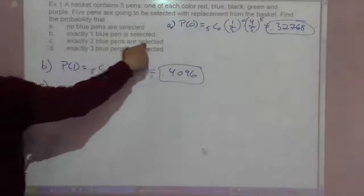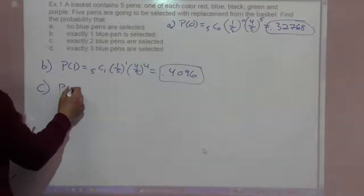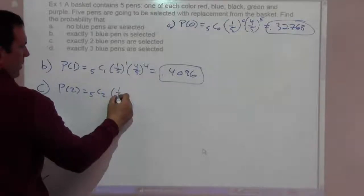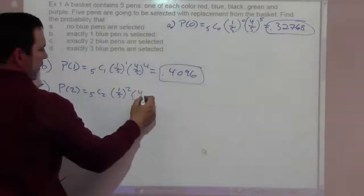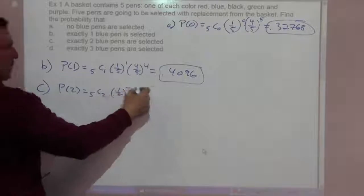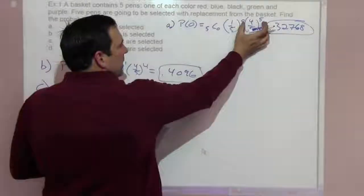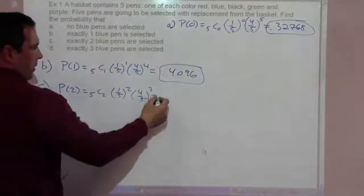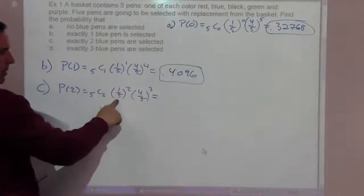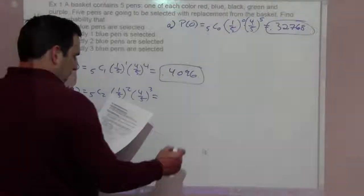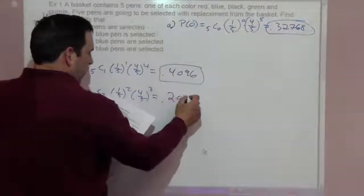Probability of exactly two blue pens: five choose two, one-fifth to the two power, times four-fifths to the five minus two is three. Notice two plus three is five, one plus four is five, zero plus five is five. You're getting success twice, failure three times. That's .2048.